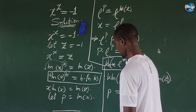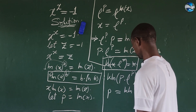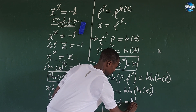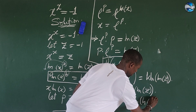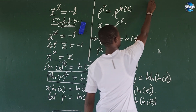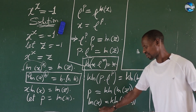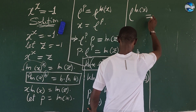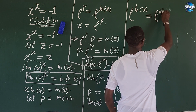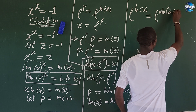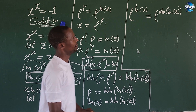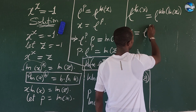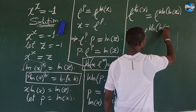Now recall that we let p be equal to ln of x, so we replace p with ln of x. We have ln of x equals W of ln of z. From here we want to solve for x, so we introduce e to both sides: e to the power of ln of x equals e to the power of W of ln of z. Since e and ln cancel on the left, we now have x equal to e to the power of W of ln of z.